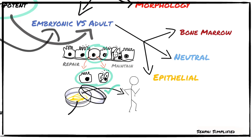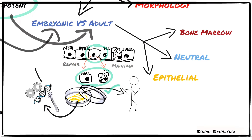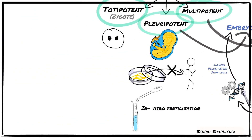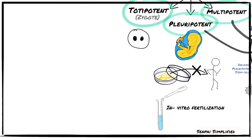There are three types of adult stem cells: bone marrow stem cells, neural stem cells, and epithelial stem cells. It's difficult to obtain embryonic stem cells; however, adult stem cells can be programmed to an embryonic stem cell-like state by having them express the genes and factors necessary to maintain the properties of a stem cell. These cells are called induced pluripotent stem cells.